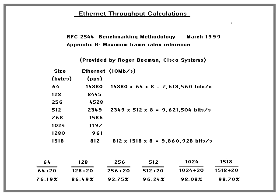In this video I'm going to show you a simple Ethernet throughput calculation and why you cannot get 100 percent throughput through your pipe, depending on your frame sizes. According to RFC 2544, at a given speed it provides maximum frame rates — the reference example shows 10 megabits, but it can scale up to 100 and 1000 megabits and beyond.